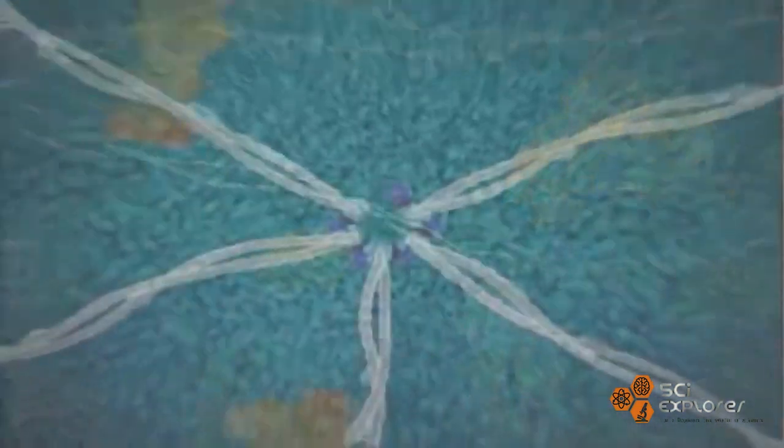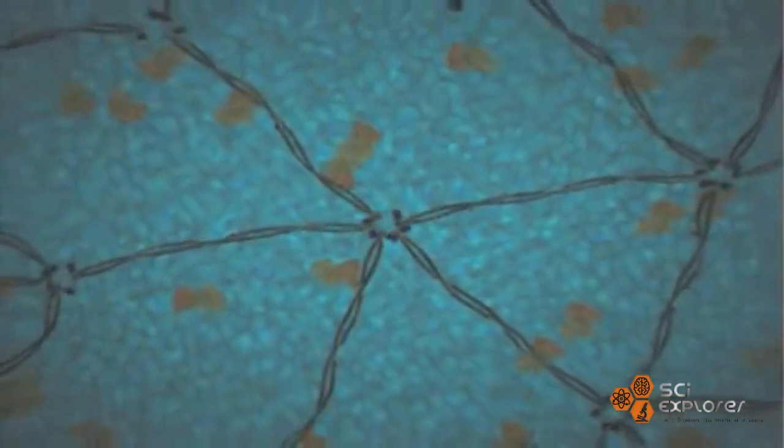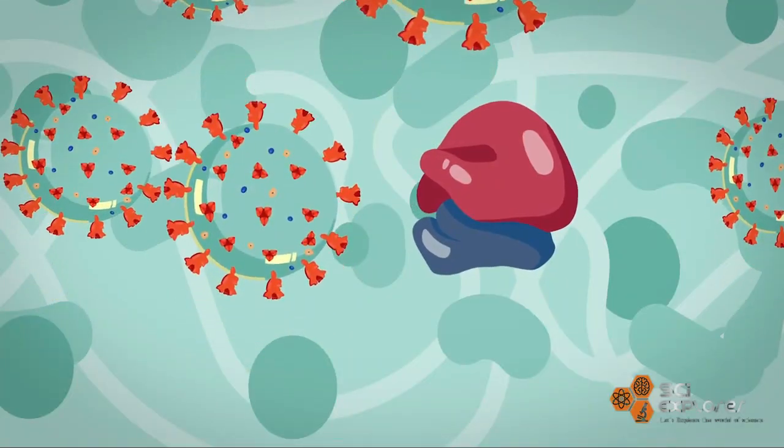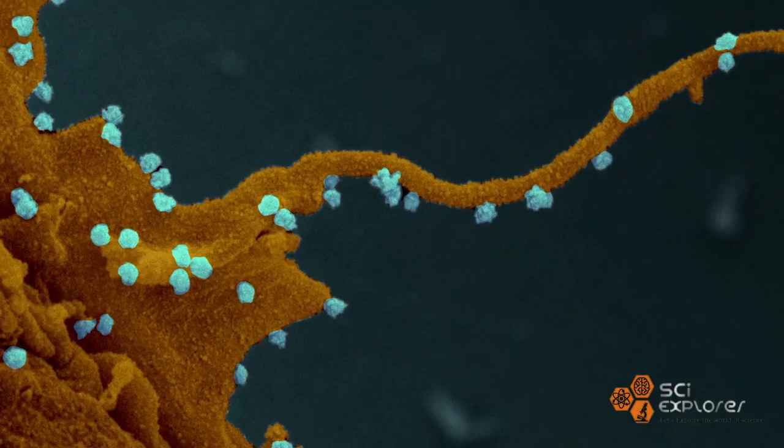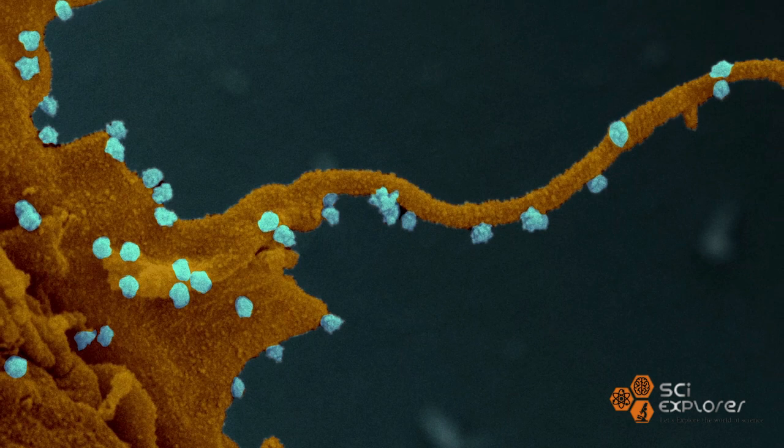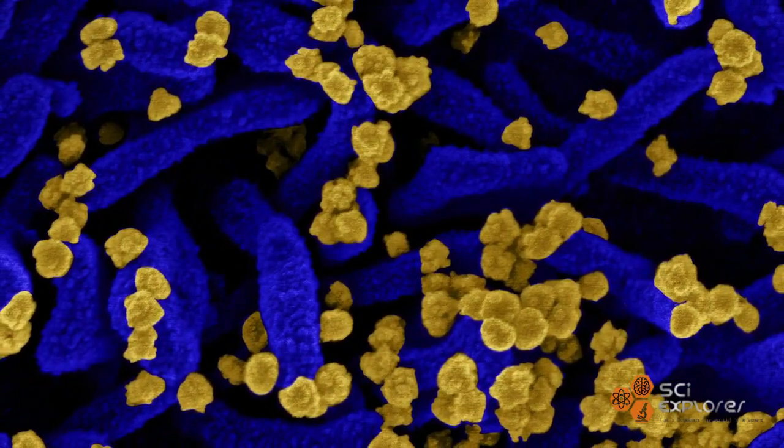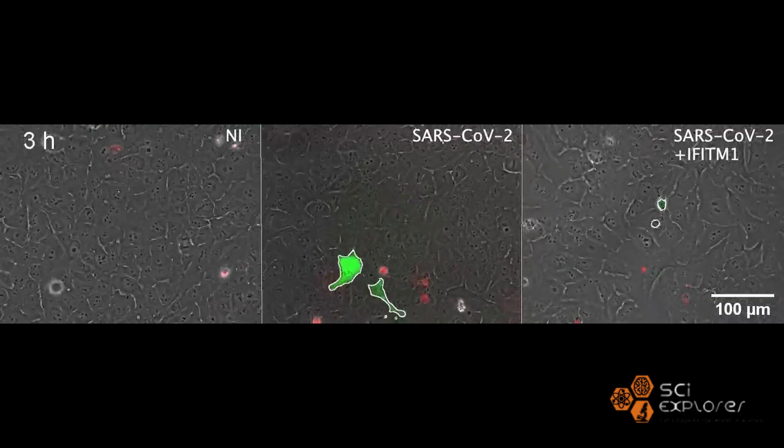Initially, newly made viral spike proteins travel to the cell surface to activate a host calcium ion channel, which expels a fatty coating onto the outside of the cell.